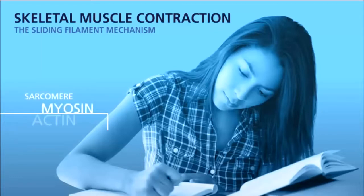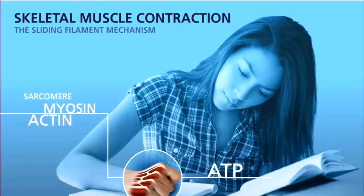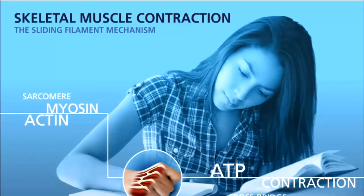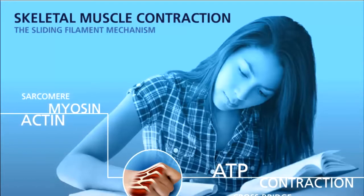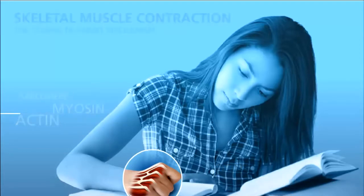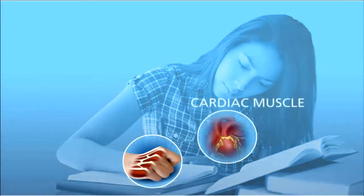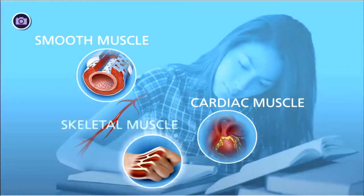You use muscles every day to do activities. This woman is using muscles to breathe, circulate blood, and move her hand to take notes. Your cardiac and smooth muscle tissues are involuntary — you do not consciously control their actions. Skeletal muscle works under voluntary control.